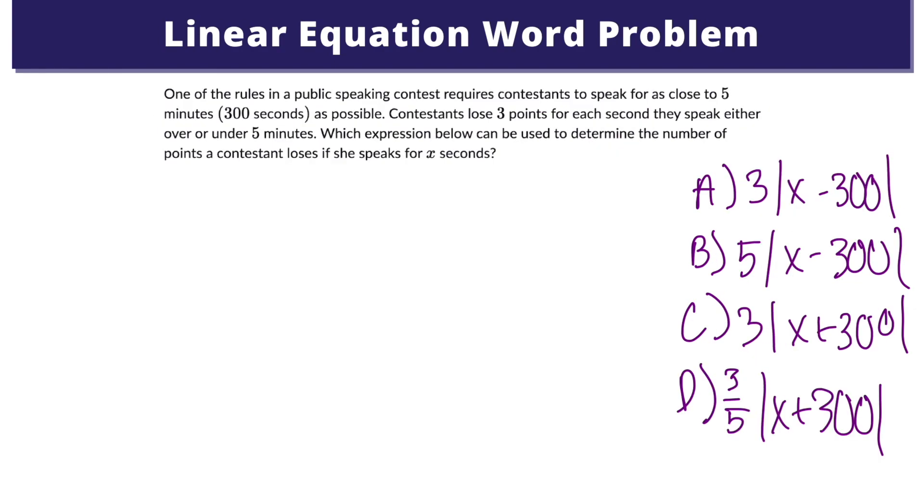In our fifth example, the number of seconds over or under 300 seconds, which is 5 minutes, can be obtained by taking the absolute value of the difference between the actual time and the target time. So that can be represented as the absolute value of x minus 300. The total point reduction equals 3 times the number of total seconds either over or under the target time. So we add a 3 on the outside of our absolute value. That gives us the answer of A.